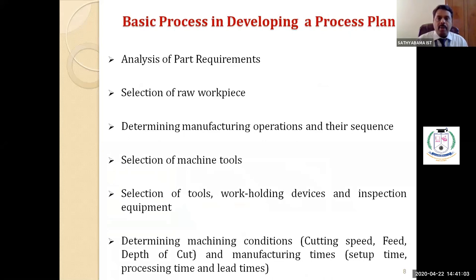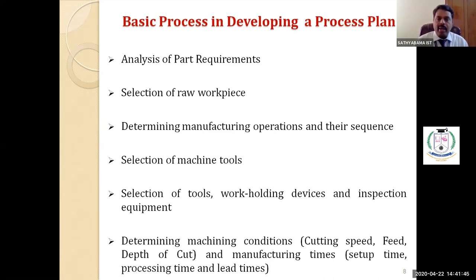Developing a process plan requires analysis of parts. For example, an industry wants to manufacture a brake drum, cylinder caliper, or axle — automotive vehicle parts. Part requirements should be analyzed first. The first step in developing a process plan is selection of raw material or raw workpiece, then determining the sequence of manufacturing operations. Any manufacturing industry considers the route sheet for determining operations in sequence. They will then select machine tools — for example, a lathe for turning or chamfering operations.